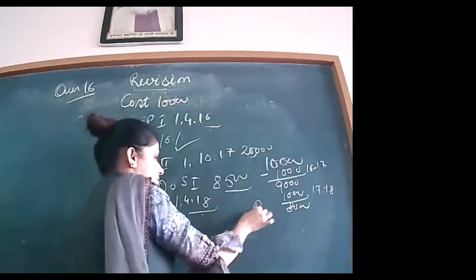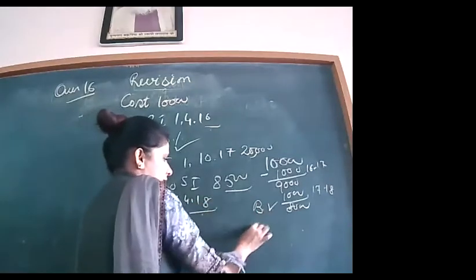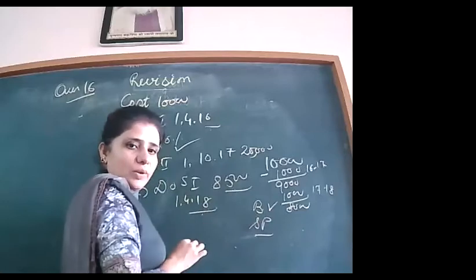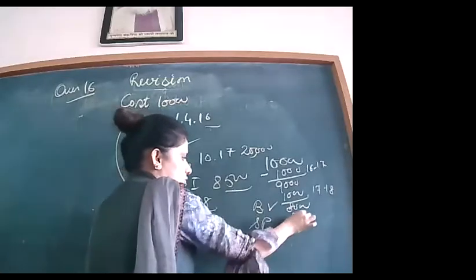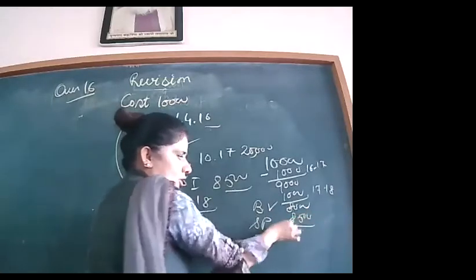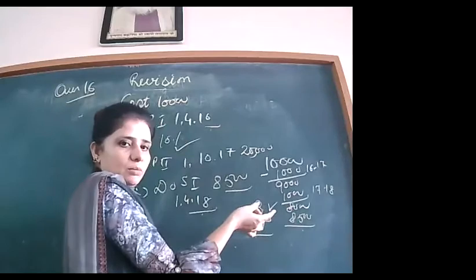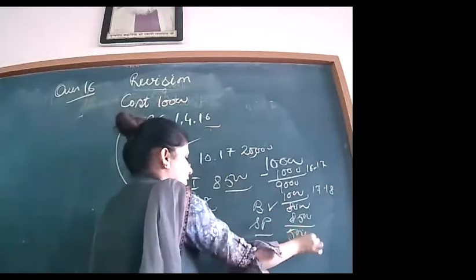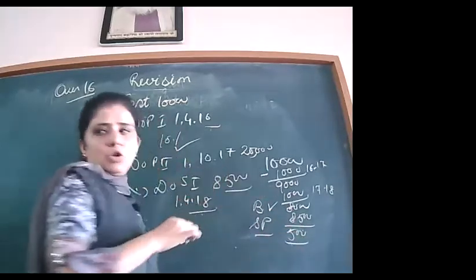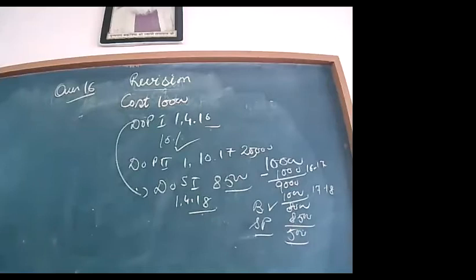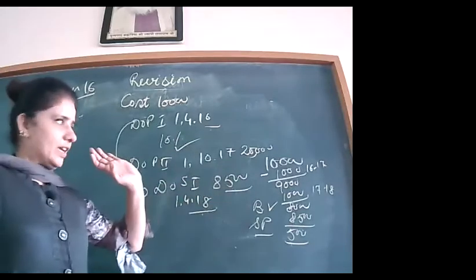Selling price is ₹8,500. Since selling price exceeds book value of ₹8,000, we are at a profit. The profit is ₹500. Checking from the book answer for question 16: ₹500 profit — matched. Now I will show this entire scenario with the help of the machinery account ledger.